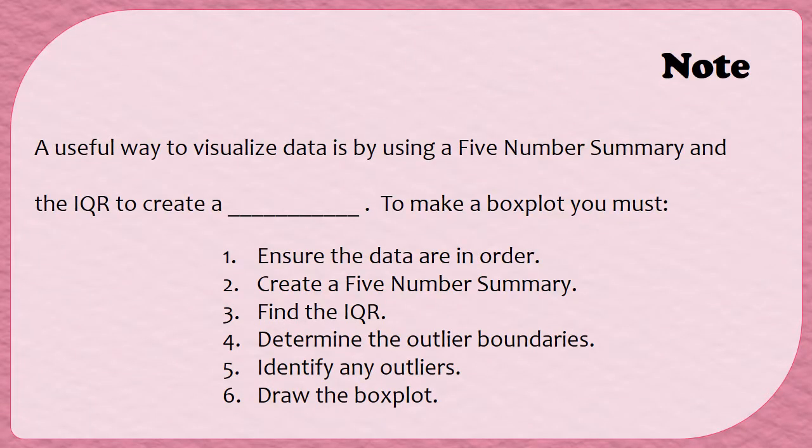A useful way to visualize data is by using a five-number summary and the IQR to create a box plot. In order to make a box plot, we have to follow these six steps. You'll notice that the first five steps are a review of things we've done before: making sure data values are in order, creating a five-number summary, finding an IQR and determining the outlier boundaries, and then identifying the outliers. Step six merely says to draw the box plot. So when we get there, we'll make sure we cut that into a few smaller steps to make sure we know how to draw it. So let's get started with an example.